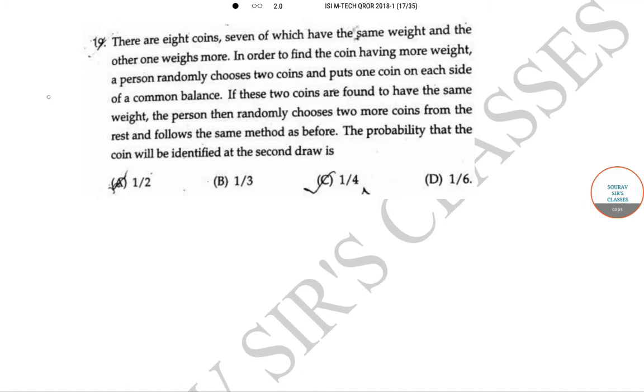The question is, there are 8 coins, 7 of which have the same weight and the other one weighs more. In order to find the coin having more weight, a person randomly chooses 2 coins and puts 1 coin on each side of a common balance.